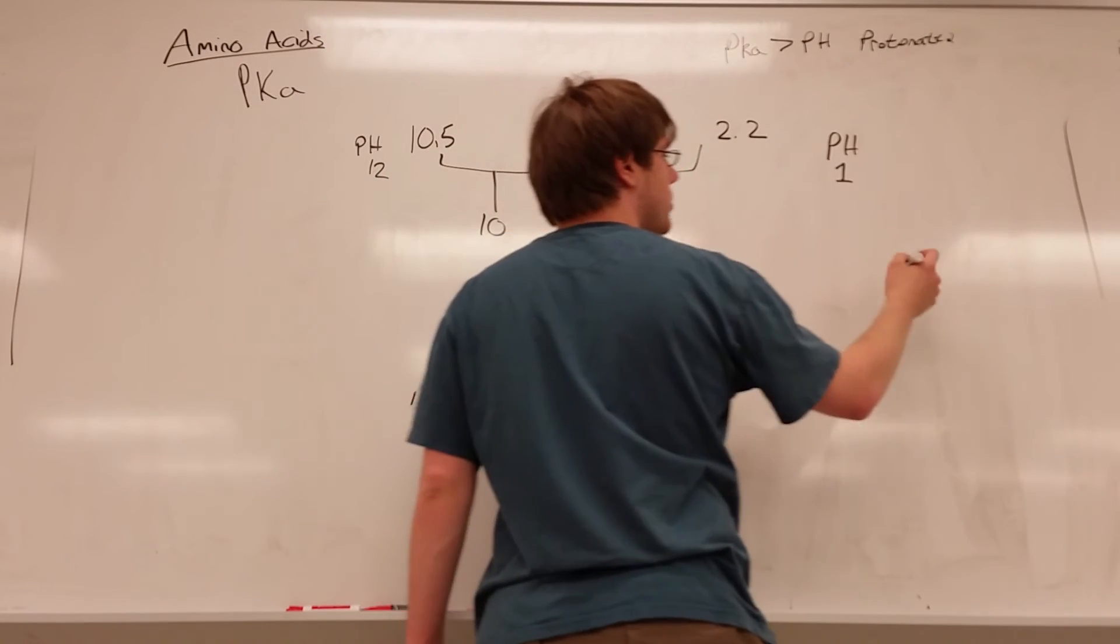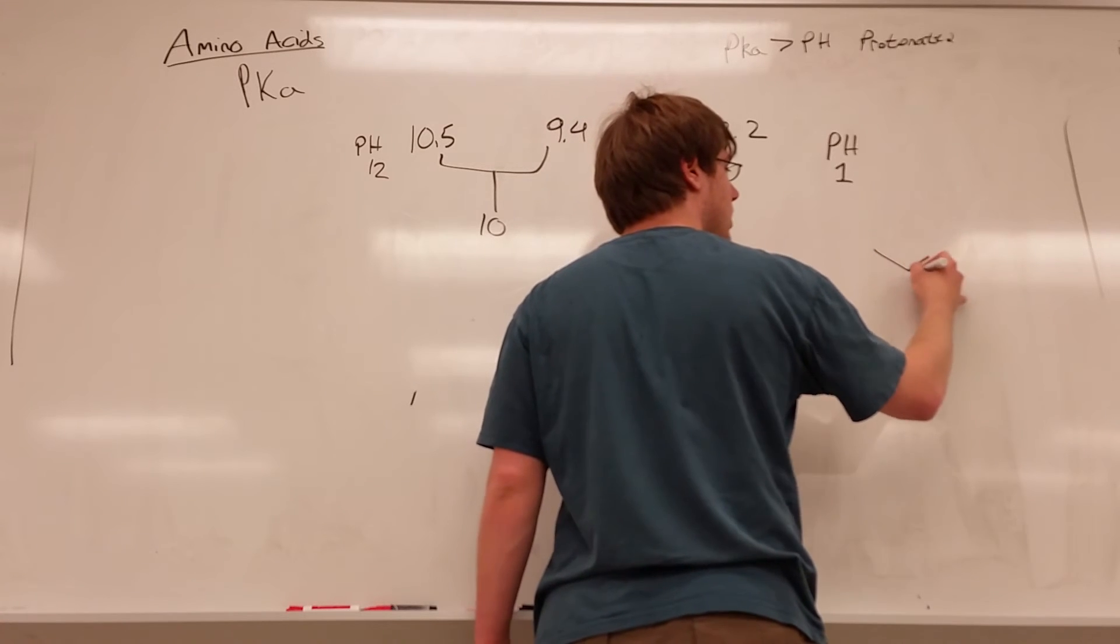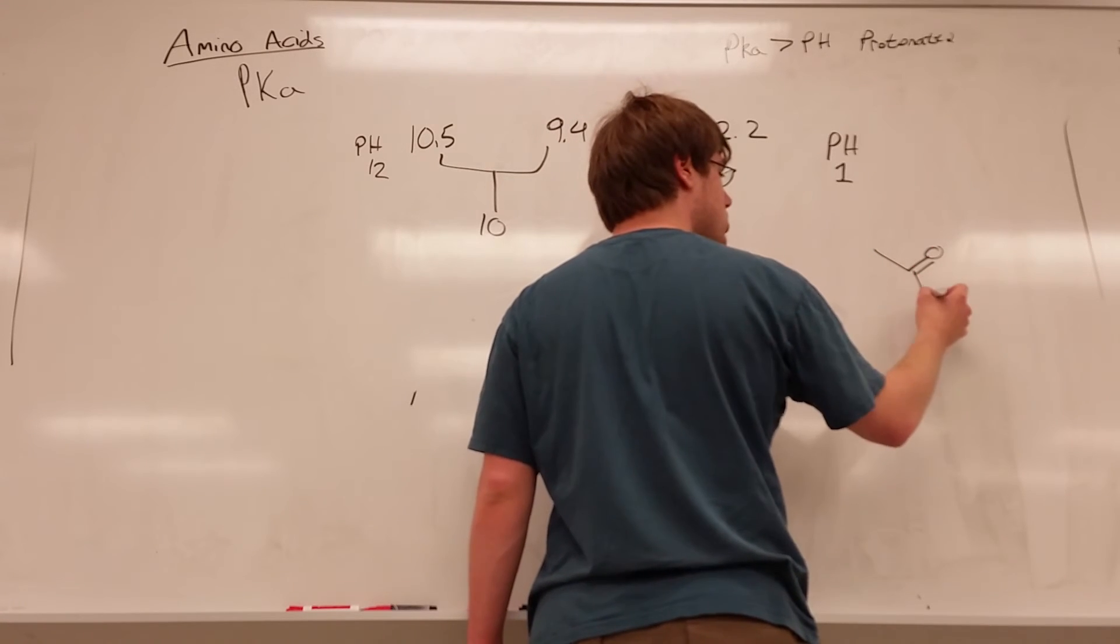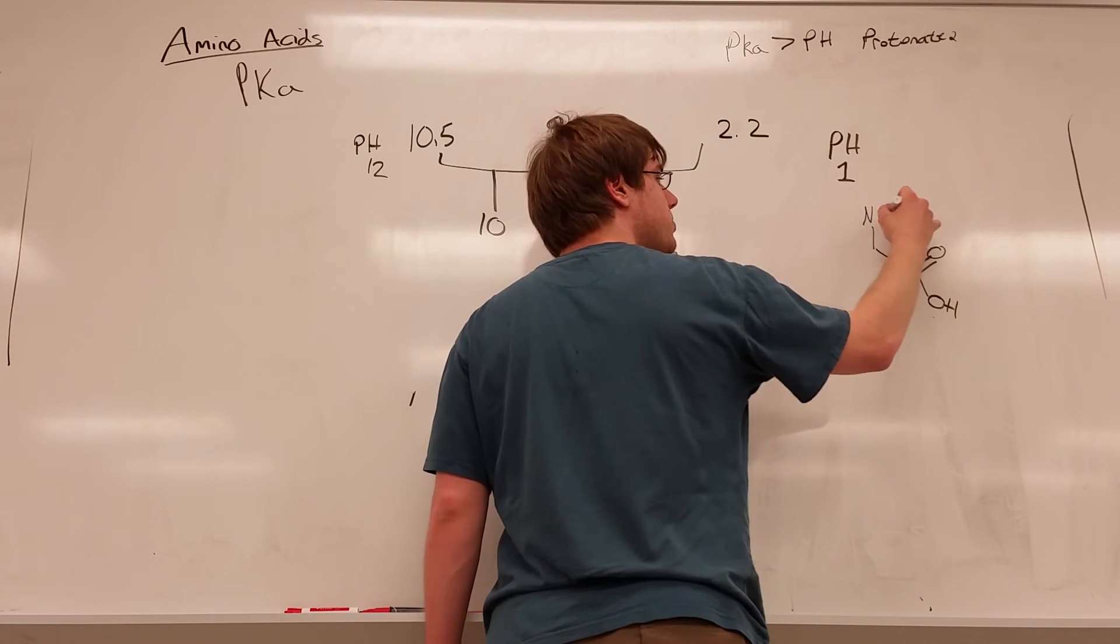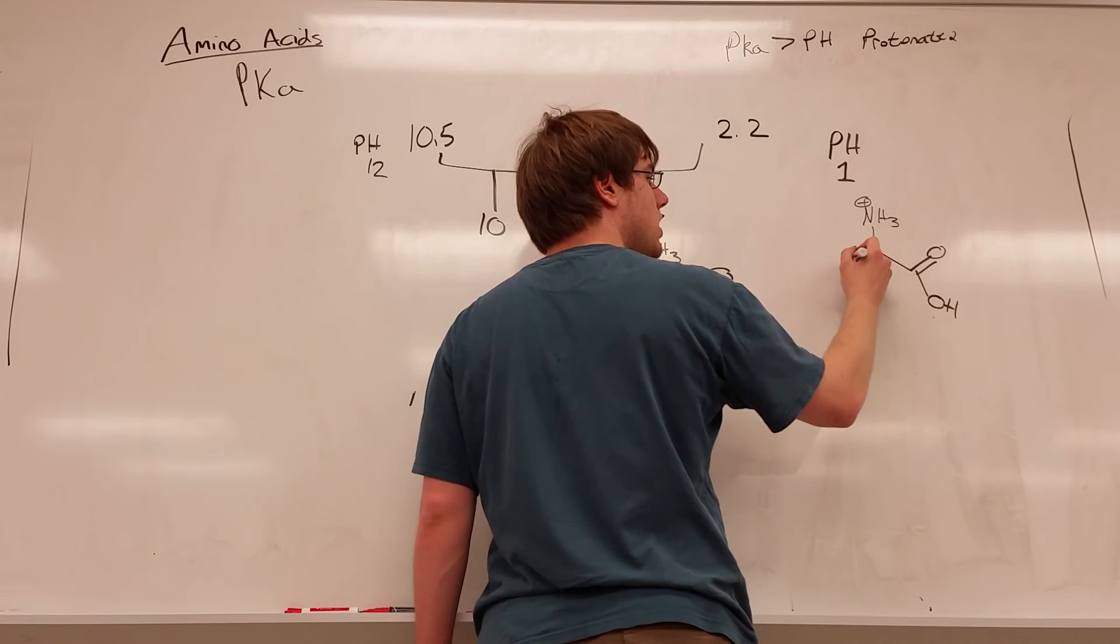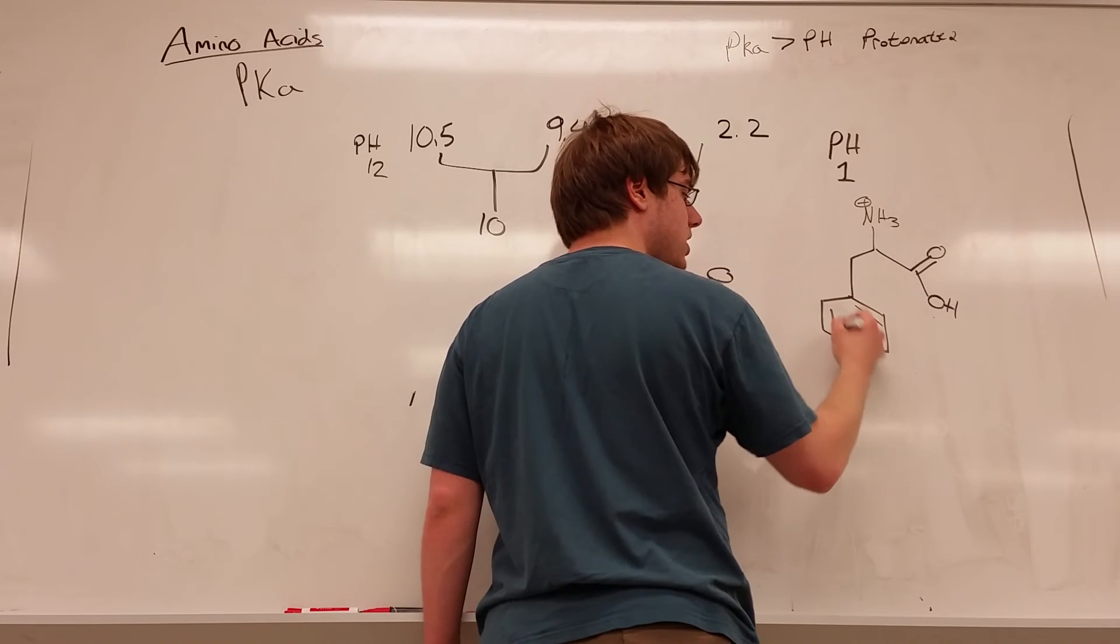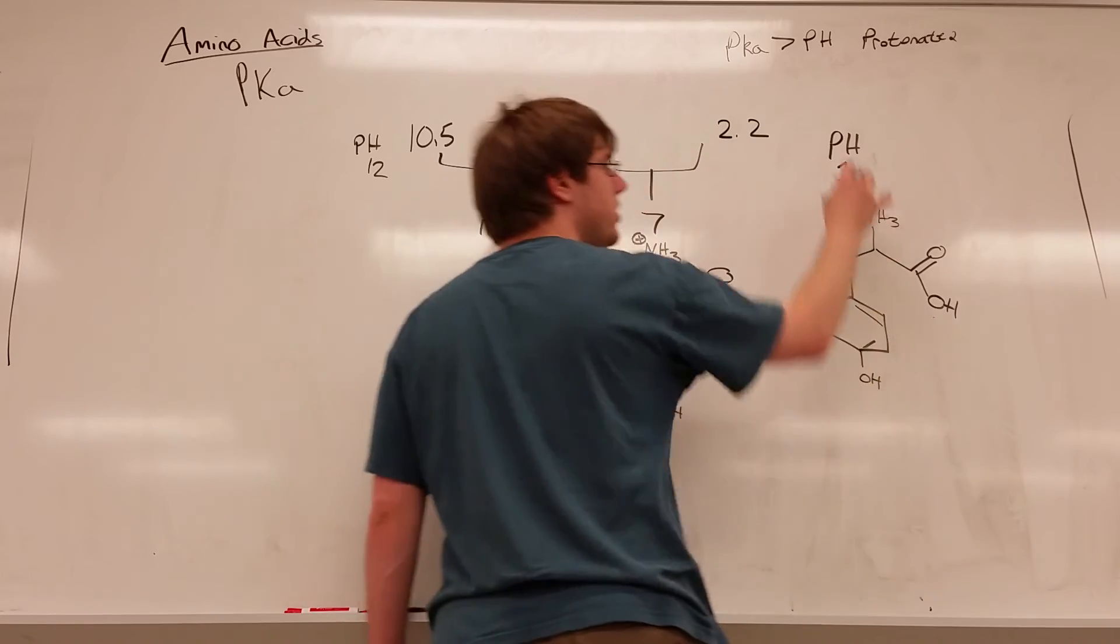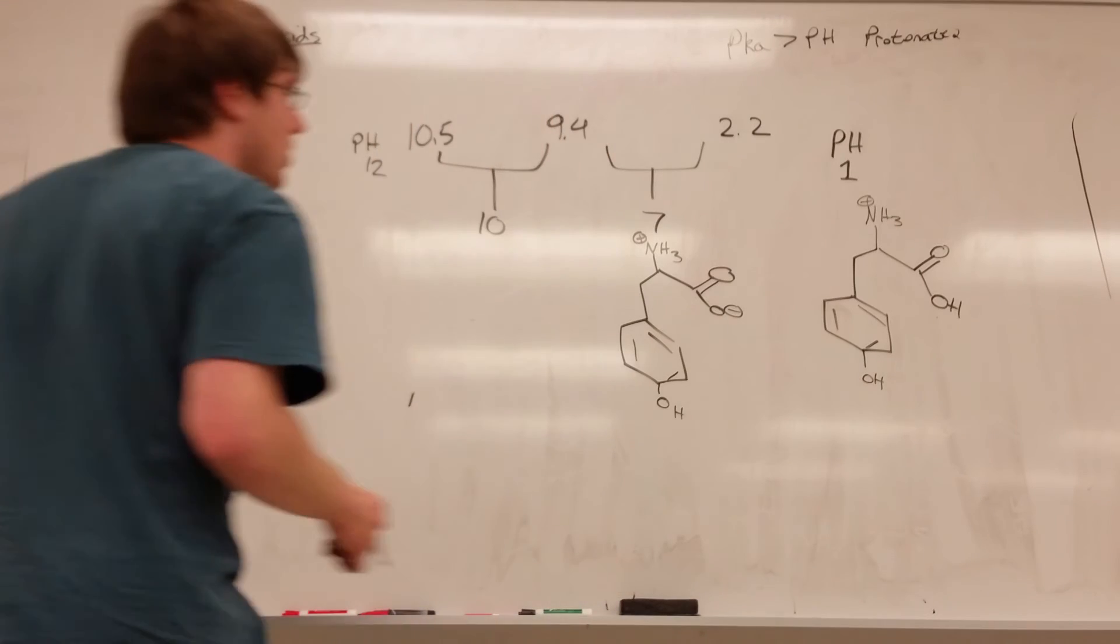And if you're in a pH that's lower than every single pKa you have, then every single functional group would be protonated. So the structure of tyrosine in a pH of 1 would mean the carboxylic acid is protonated, the amino group is protonated, and the side chain is protonated. Every single thing is protonated, because you're in a super acidic solution, there are tons of protons floating around to be given.